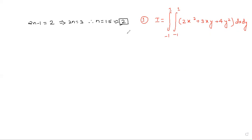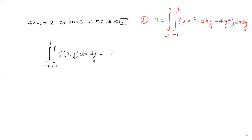We will take values from the table for n equal to 2. The formula for the two-dimensional case is the double integral from minus 1 to 1 of f(x, y) dx dy. The expansion of this formula can be written as a double summation: j from 1 to n and i from 1 to n of the corresponding weights times the function values.